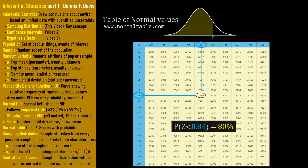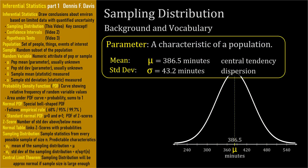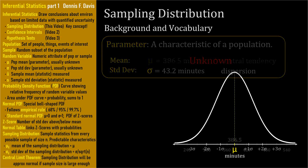Back to our batteries and our population parameters mu and sigma. The fact is, we hardly ever know what they truly are. Populations are usually too big for us to measure or evaluate every single member, or it might be too expensive or just impractical. In our battery example, we couldn't test every battery's life or we wouldn't have any left to sell. So we have a conundrum — we want to know the population mean but we can't measure it directly, so instead we take a sample.